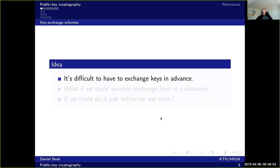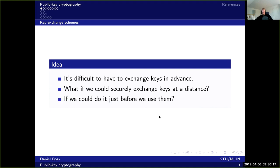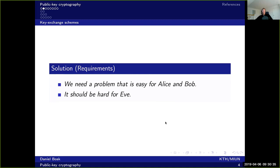The idea with key exchange schemes is that it's difficult to have to exchange keys in advance, because you never know with whom you might actually need to talk. What if we could just securely exchange these keys at a distance, just before we need to use them? The solution requires a problem that's easy for Alice and Bob to solve, but hard for Eve to solve.